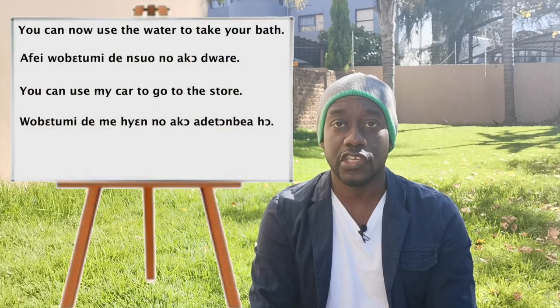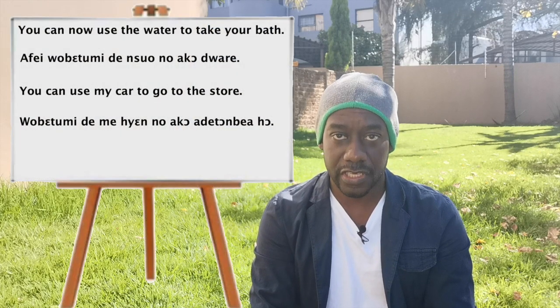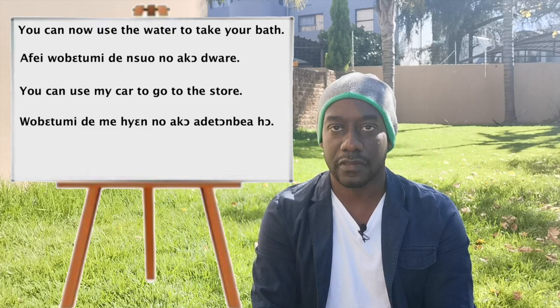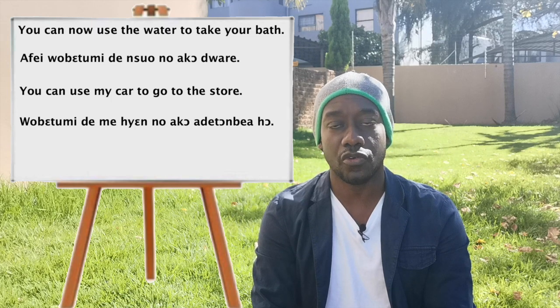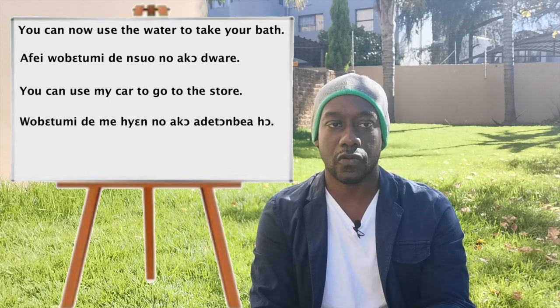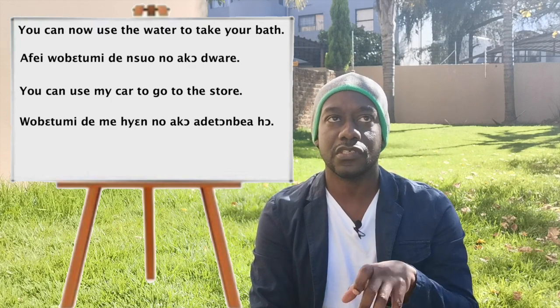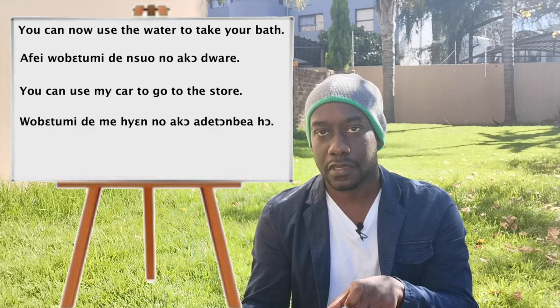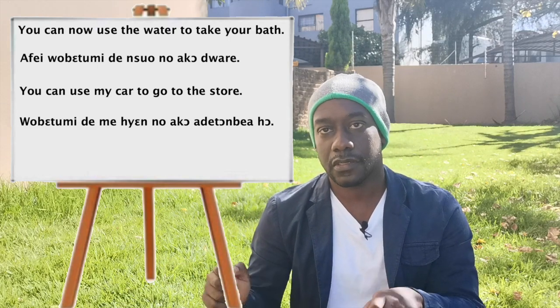Some sentences won't have 'fi' inside but we deduce 'use' from them. For example, the first sentence Lionel sent: 'you can now use the water to take your shower.' In Chi that is: 'afei ube tumi di nsuono aku jari.' Afei is 'now', ube tumi is 'you can', di nsuono means 'use the water', and aku jari means 'to go bathe.'